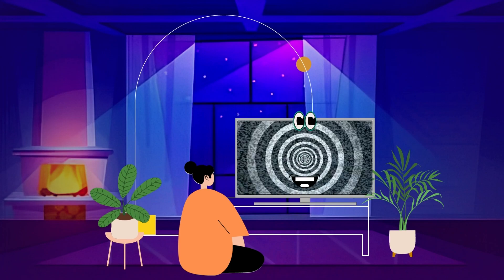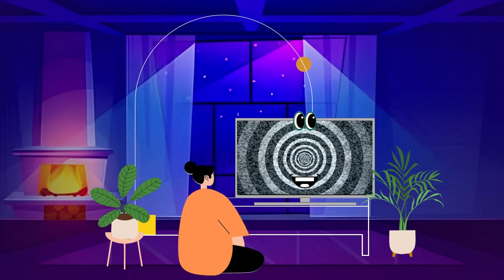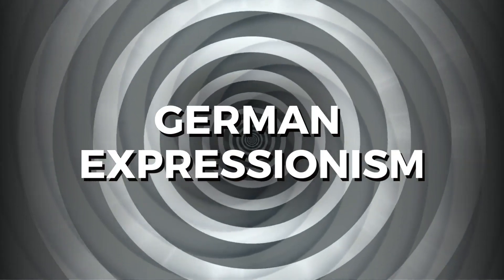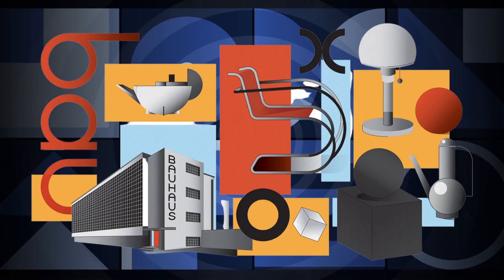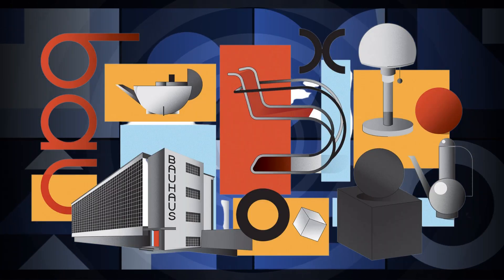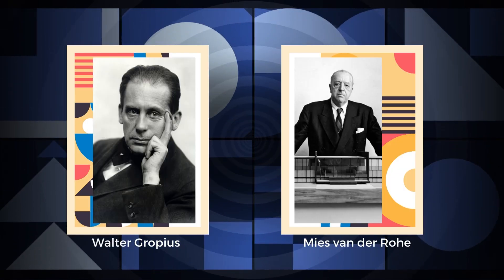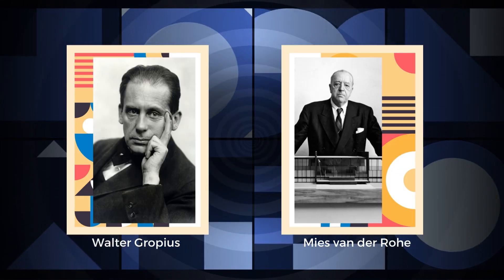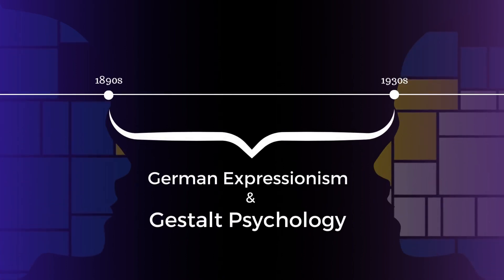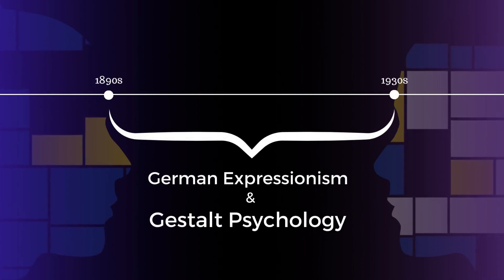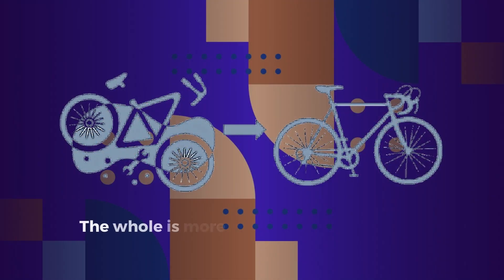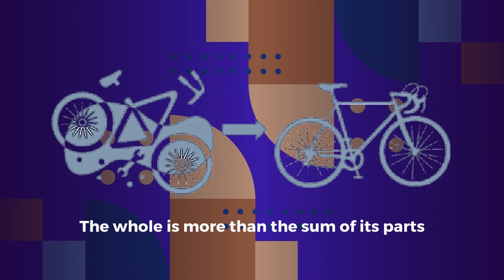As I was saying before you so rudely interrupted me, I was about to get to the good part related to the German Expressionist movement and what it teaches us about modern design. The movement was a key influence on modern design, as you can see in the works of designers like Walter Gropius and Mies van der Rohe. The German Expressionist movement and the principles of Gestalt psychology came out around the same time, and they both draw on human perception to explain that the whole is more than the sum of its parts.